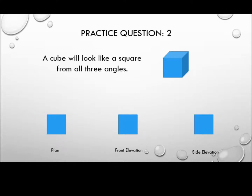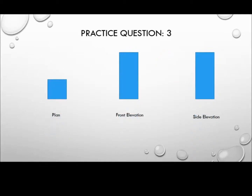A cube would look like a square from all three orientations. Let's try the next one. Looking from the top down it looks like a square, but from in front and from the side it looks like an oblong.